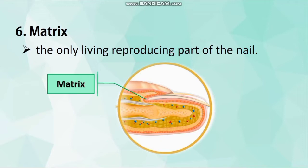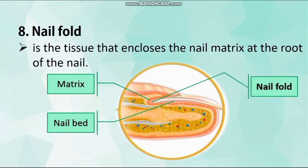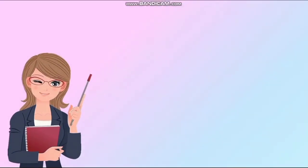The matrix also contains blood vessels and nerves. Blood supply provides the cells with nourishment. If the matrix is damaged, the nail will grow deformed. Number 7: Nail bed — the part where the nail plate rests, and also the continuation of the matrix. Number 8: Nail fold. Nail fold is the tissue that encloses the nail matrix at the root of the nail. It attaches the nail to the rest of the skin through the protected cuticle. Did you know that since our nails are made of hard material called keratin — the same stuff as our hair — they do not sweat and have no feelings?